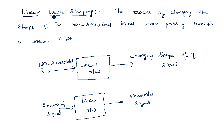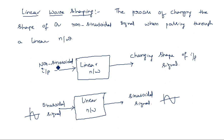It changes the shape only of a non-sinusoidal signal. The shape of a non-sinusoidal signal changes according to the behavior of the component used inside the linear network. If you pass a sinusoidal signal, the output is also sinusoidal. For a non-sinusoidal input — whether ramp, step, pulse, or exponential — the output changes according to that input. This is the meaning of linear wave shaping.